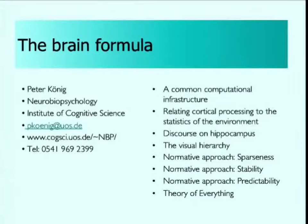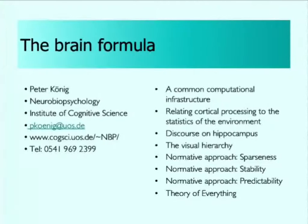Good morning, welcome to the special lecture on the brain formula. Today we will talk about a generic approach to describe the function of the brain. We start out questioning a computational infrastructure, with the idea that the brain involves smart processing which is in principle simple — described by few formulas. You can write down half a page of math to describe brain function, and the complexity actually emerges from the interaction with the environment.